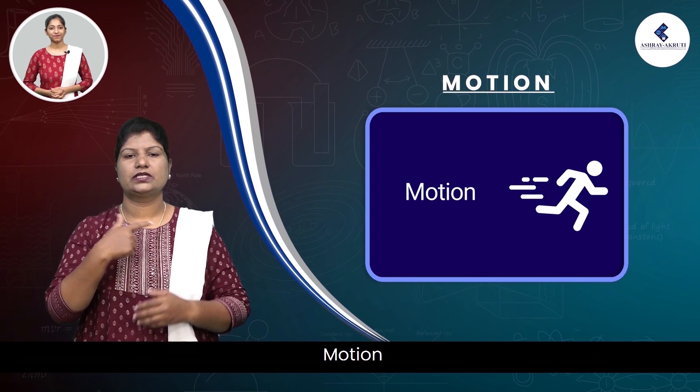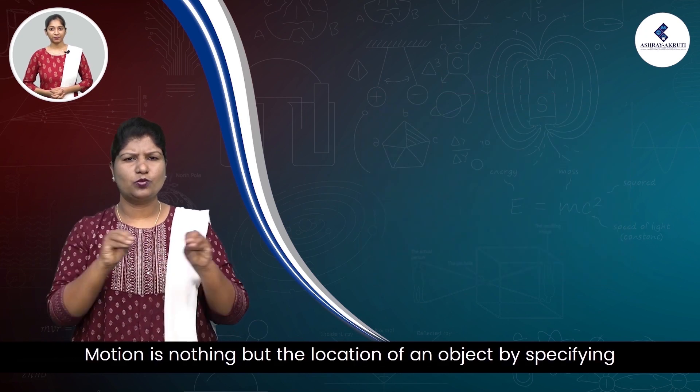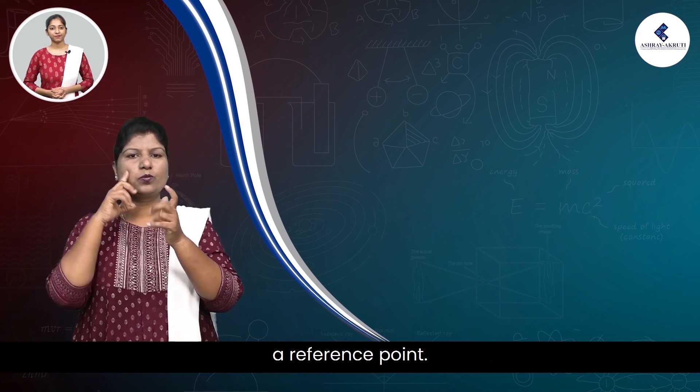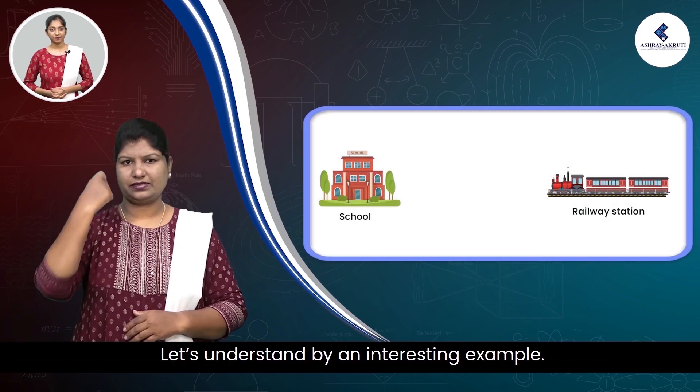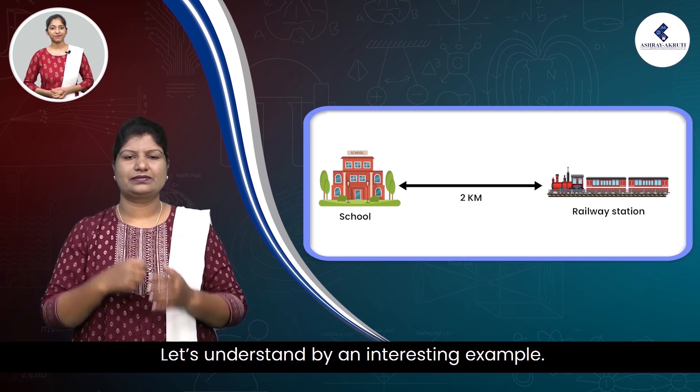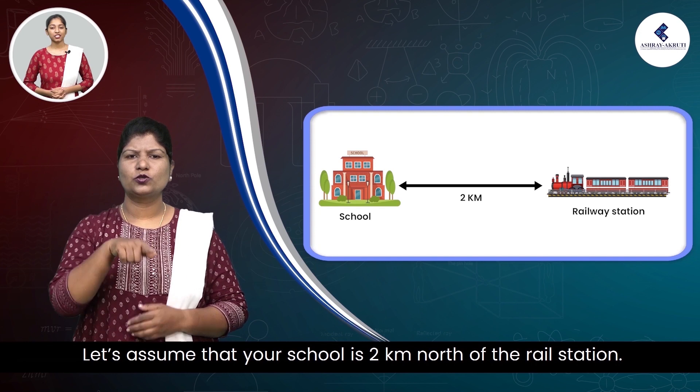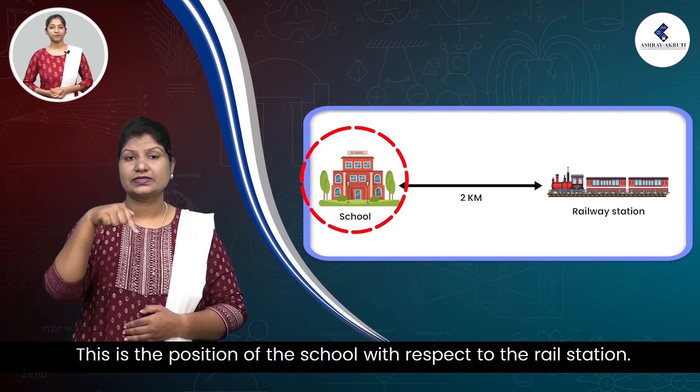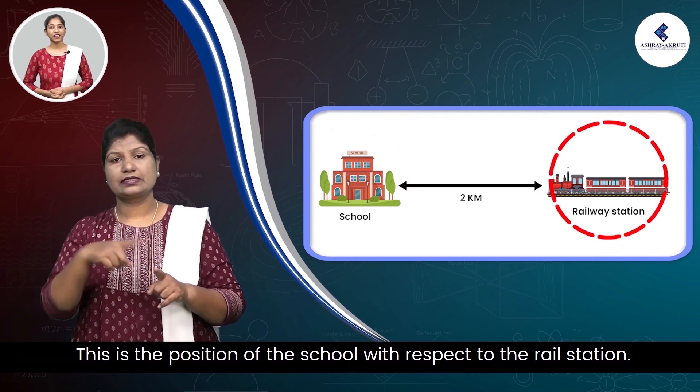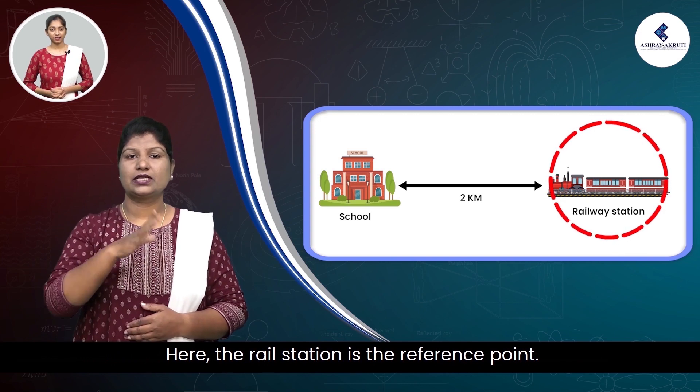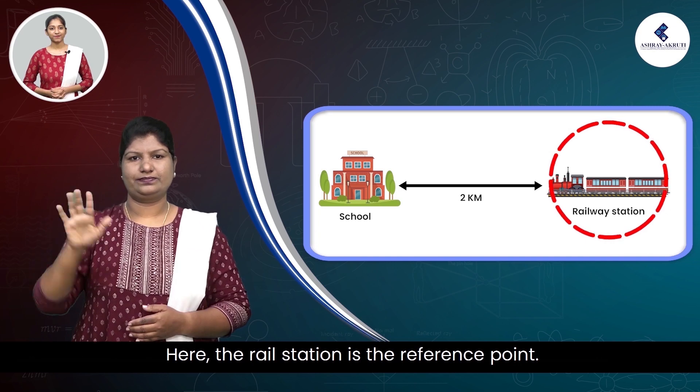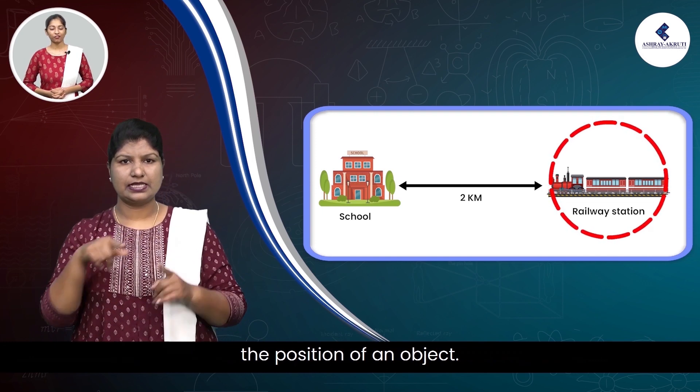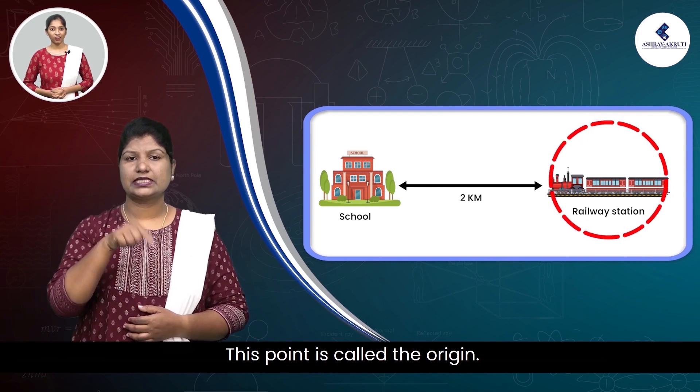Motion is nothing but the location of an object by specifying a reference point. Let's understand by an interesting example. Let's assume that your school is two kilometers north of the rail station. This is the position of the school with respect to the rail station. Here, the rail station is the reference point. It is important to specify a reference point to describe the position of an object. This point is called the origin.